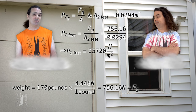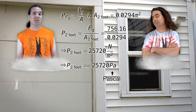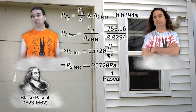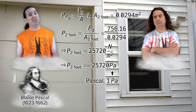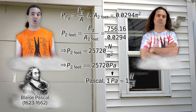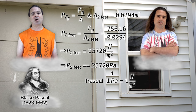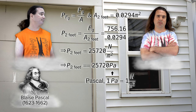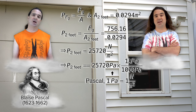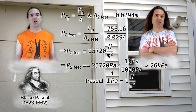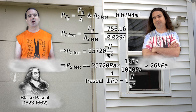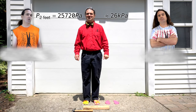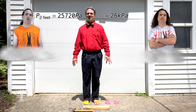Pressure is measured in newtons per square meter. However, that unit is given the special name pascals, in honor of Blaise Pascal, a 17th century French physicist, mathematician, and inventor. One pascal equals one newton per square meter. So the pressure is 25,720 pascals. We can multiply by 1 kilopascal over 1,000 pascals to get 26 kilopascals, a common unit for pressure. One kilopascal equals 1,000 pascals, like one kilometer equals 1,000 meters, and one kilogram equals 1,000 grams.